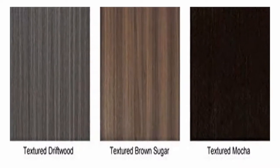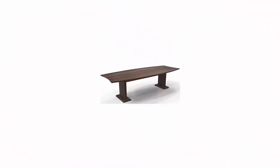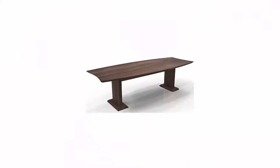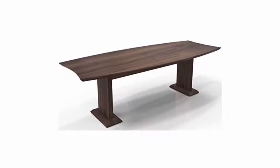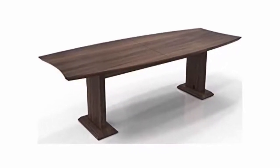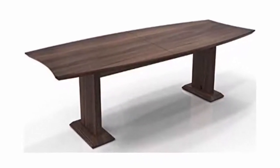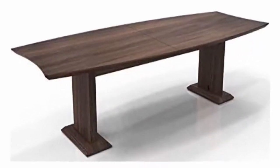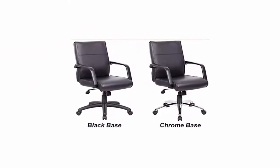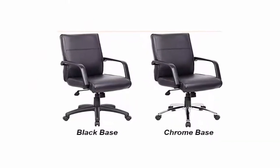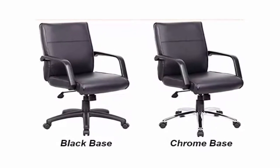Modern Conference Table Set Available in Multiple Sizes. Conference Table is Available in Either Textured Driftwood, Textured Brown Sugar or Textured Mocha Finish. Table Features a High-Tech, Lacquered and Textured Finish with Gloss Highlights and a Handcrafted 1 5/8 inch Thick Table Top with Sleek Knife Edge Profile. Chairs Have Black Leather Upholstery and Are Available in Either Polished Chrome Base or Black Base.